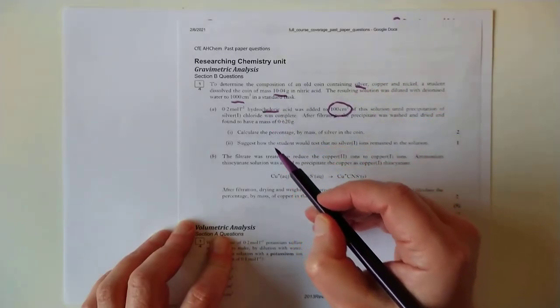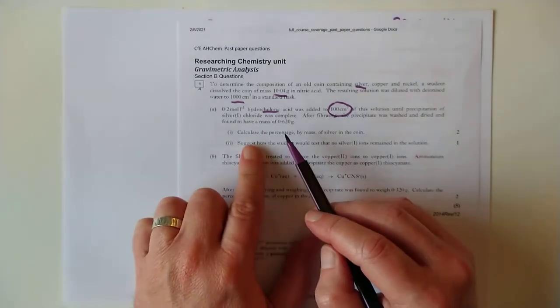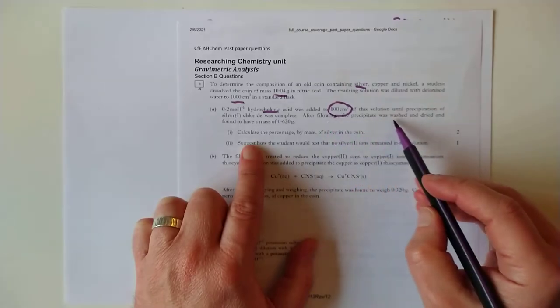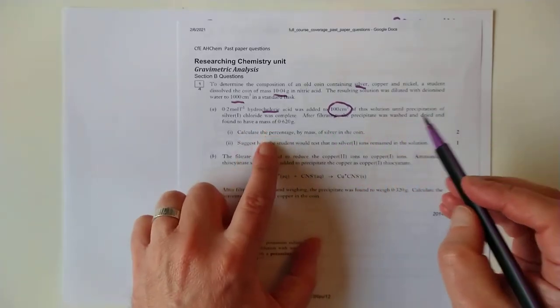until precipitation of the silver one chloride was complete, I see. So basically, you've got your silver ions in solution. You're adding chloride ions, just like Dave's fish tank, in fact, to it. And you're precipitating silver chloride out.